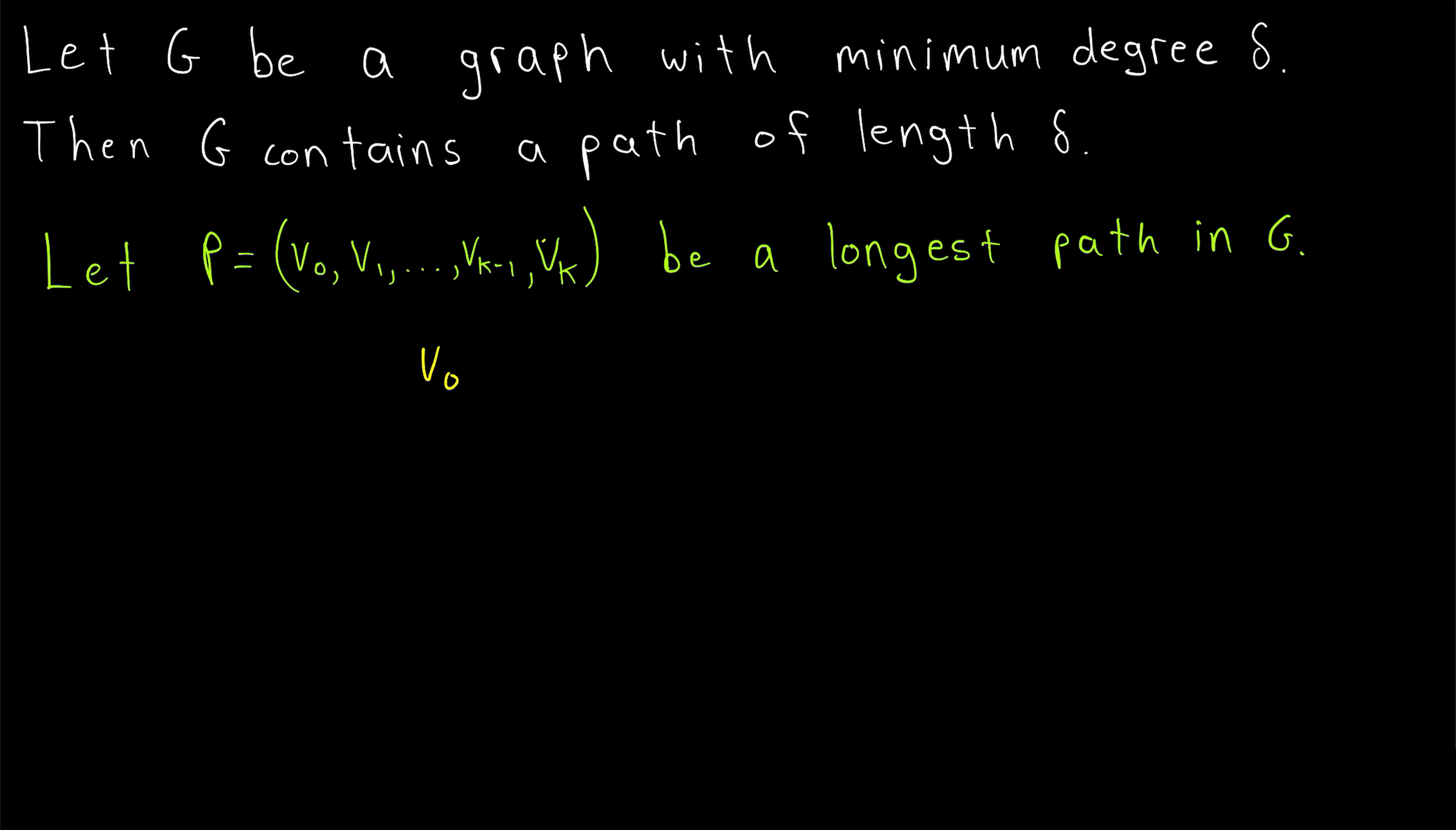Note that it's possible k is equal to zero, and so v0 is equal to vk, and our path has a length of zero. Our proof accommodates that possibility just fine.